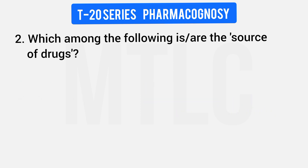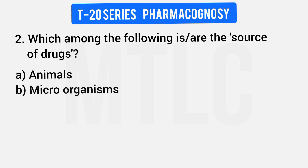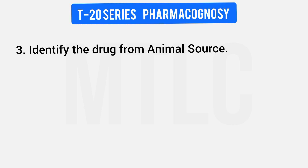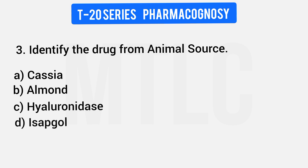Second question: Which among the following is a source of drugs? Options: Animals, Microorganisms, Plants, All the above. The answer is all the above. Next: Identify the drug from an animal source. Options: Cassia, Almond, Hyaluronidase, Isabgol. Isabgol is from Plantago ovata — a plant. Almond (Badam) is a plant. Hyaluronidase — anything ending in '-ase' means enzyme, so Hyaluronidase is from an animal source.